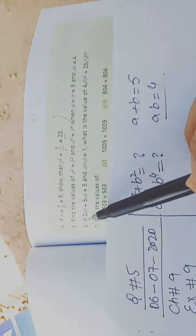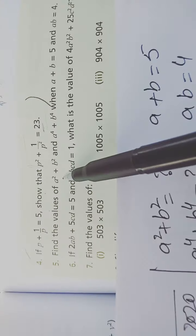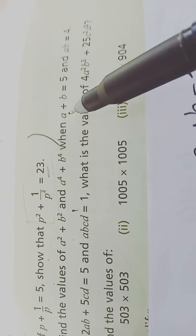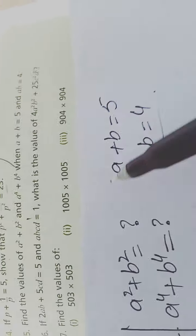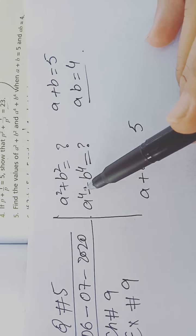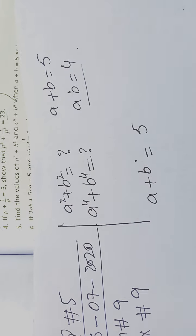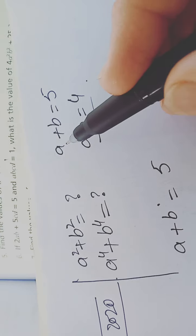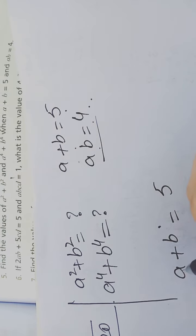Question 5: find the values of a² + b² and a⁴ + b⁴, when a + b = 5 and ab = 4. So we need to find a² + b² and a⁴ + b⁴. The given values are a + b = 5 and ab = 4.